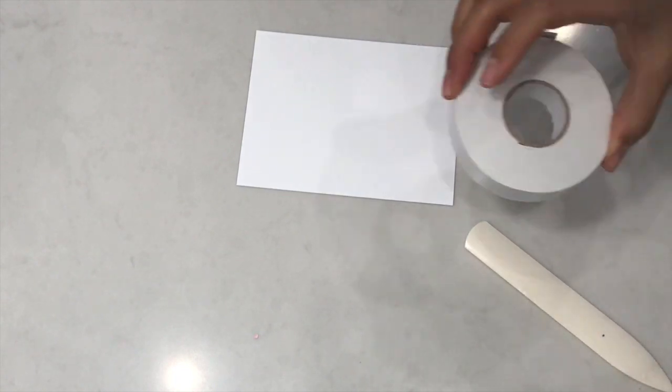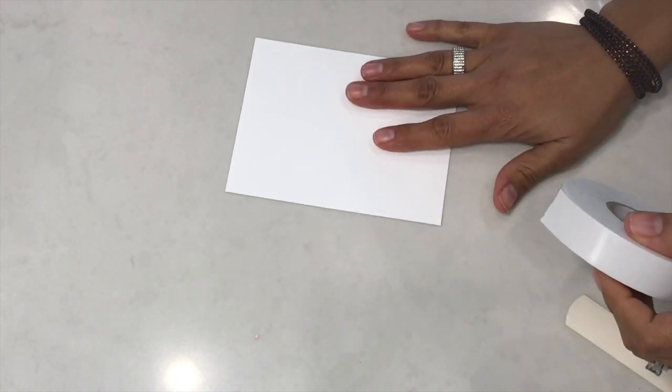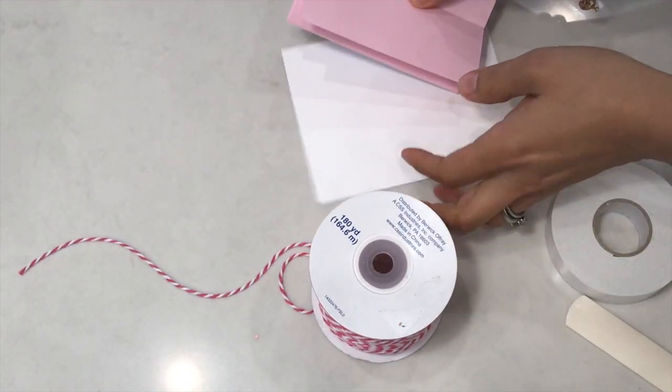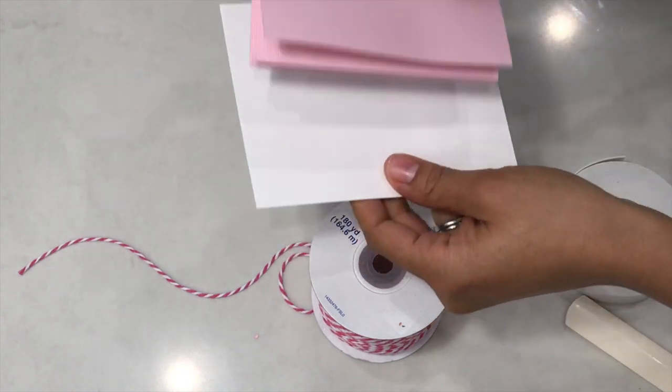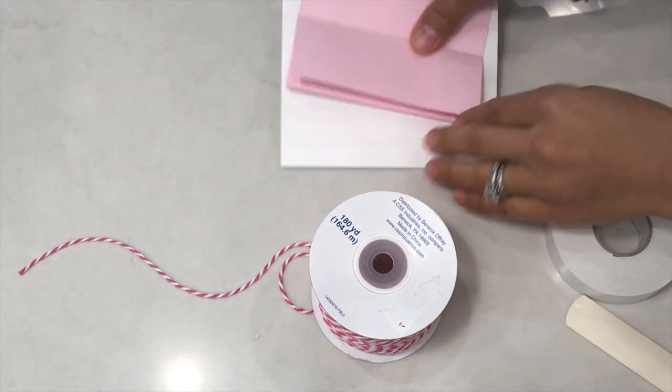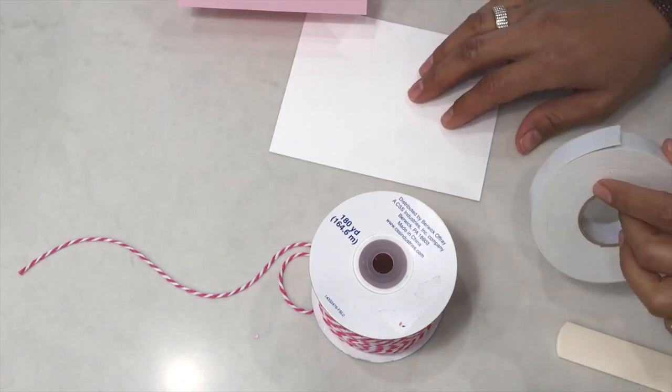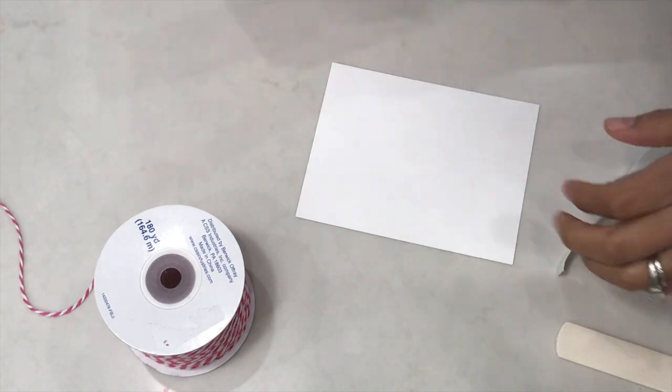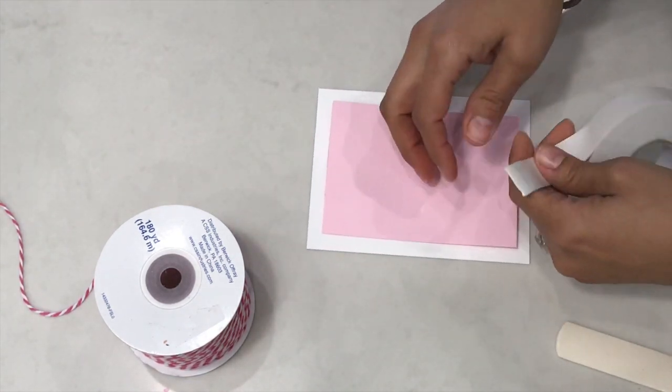What I did was I used this foam tape and this twine. I'm just going to attach my accordion fold card to the base of the card like that. What I'll do is go ahead and adhere the adhesive to the back of this part right here.